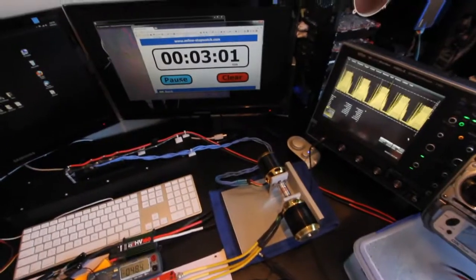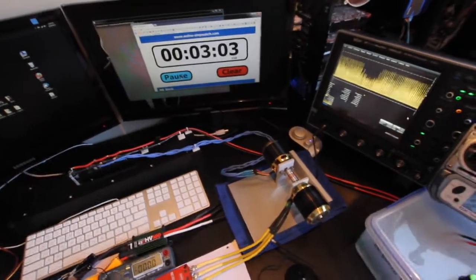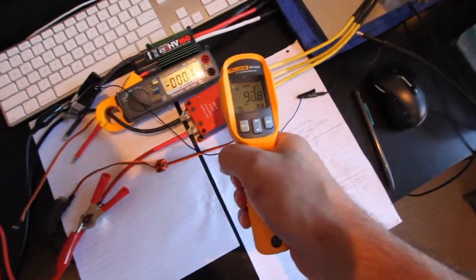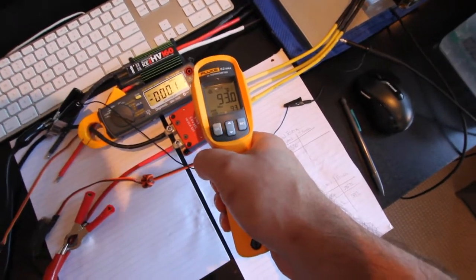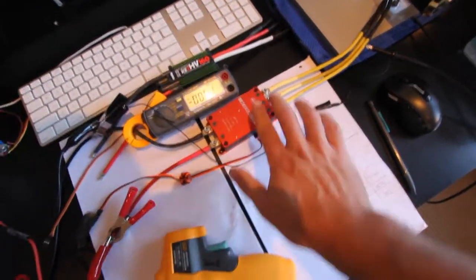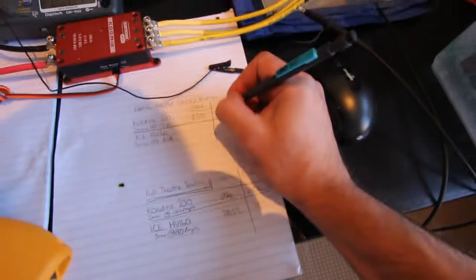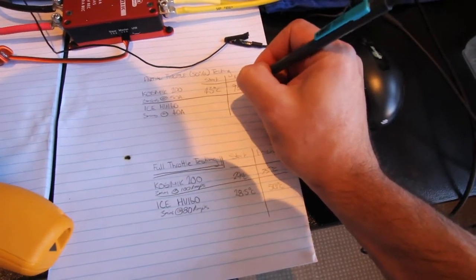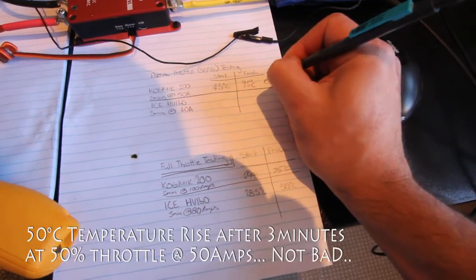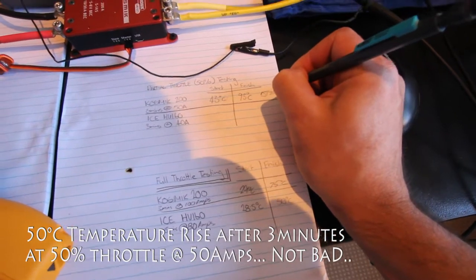Okay that's our test, three minutes. Alright so our finished temperature is 93 degrees Celsius, yeah that's actually quite hot. Alright so 93 degrees Celsius, so our Delta T equals 50 degrees.